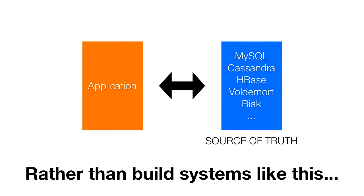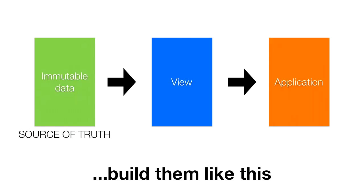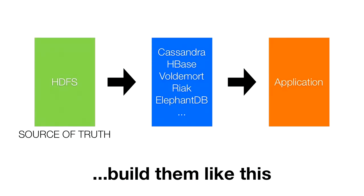But rather than build systems like this, let's start building systems where your source of truth is an immutable data store, and then you build specialized views on top of that immutable data to serve your application. One simple way to build your immutable data store is just to use flat files in HDFS — whenever you want to add new data, you add a new file containing your new data records to some directory in HDFS. Then you use systems like Hadoop and Storm to build your specialized views, which get indexed into your specialized NoSQL databases, and those views go on to serve your application. NoSQL databases still have a place in this architecture, but they're not your source of truth — you can recompute those views at any point from your immutable source of truth.